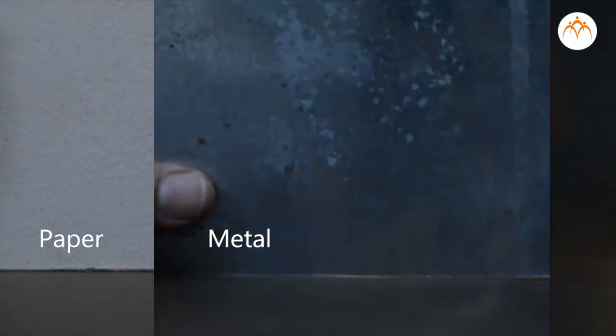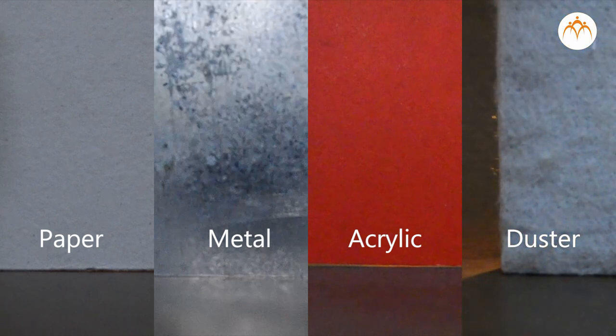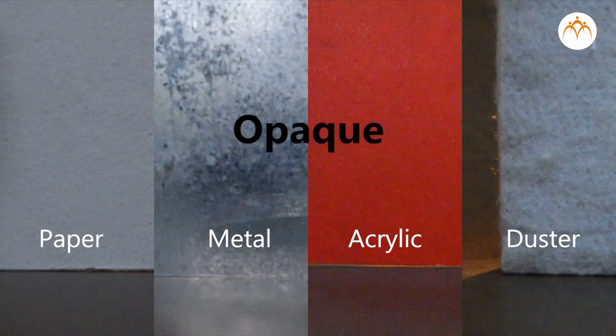Let me place this paper, metal sheet, acrylic sheet, duster as well. All these objects stop light from passing through it. These objects are called opaque objects.